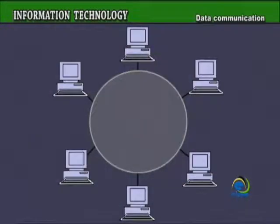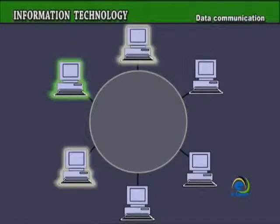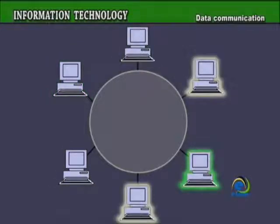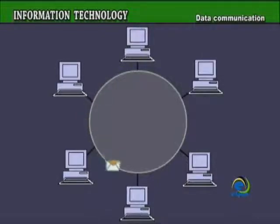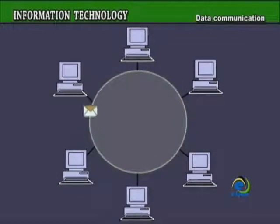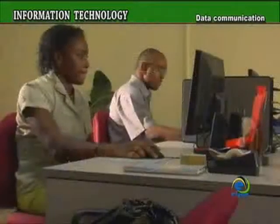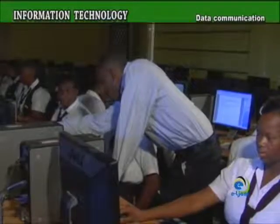In a ring network, every device has exactly two neighbors for communication purposes. All messages travel through a circle in the same direction, either clockwise or counterclockwise. A data token is used to grant permission for each computer to communicate. A failure in any cable or device breaks the loop and causes the entire network not to work. Ring topology is found in some office buildings, school, or college campuses.